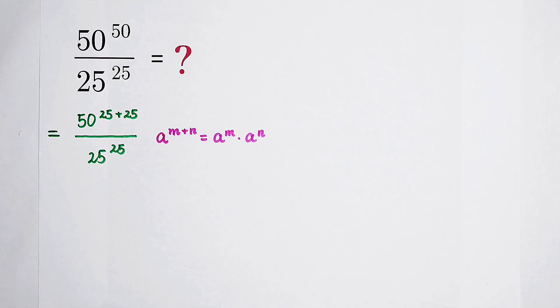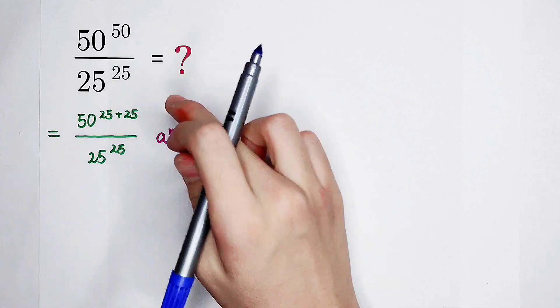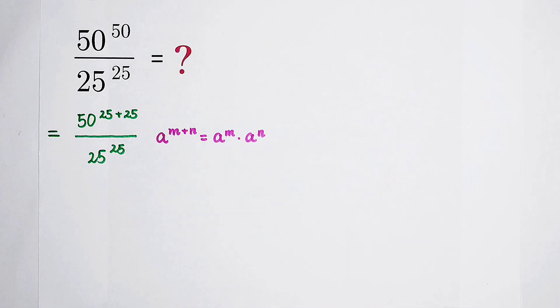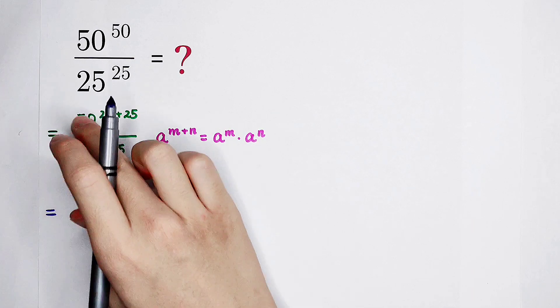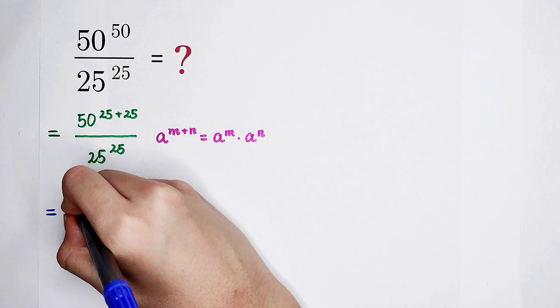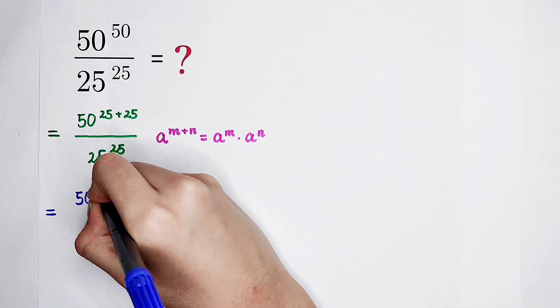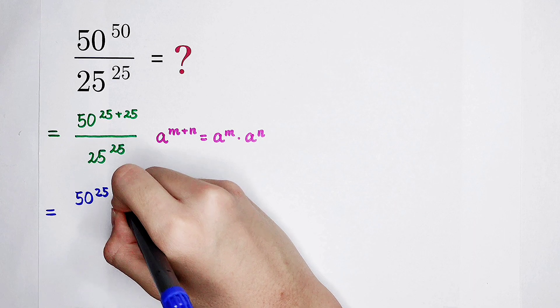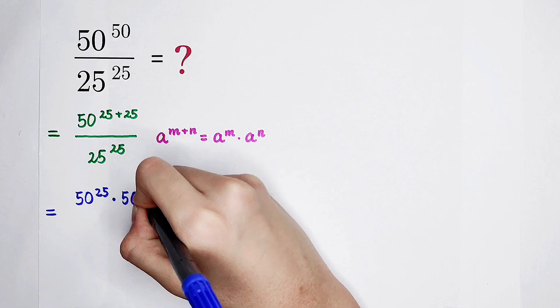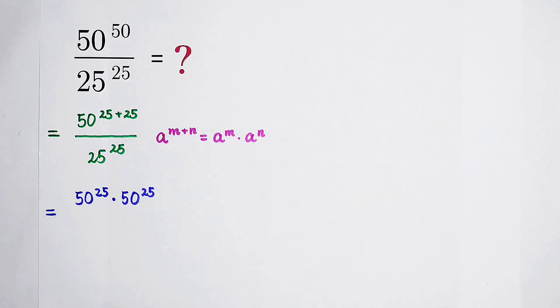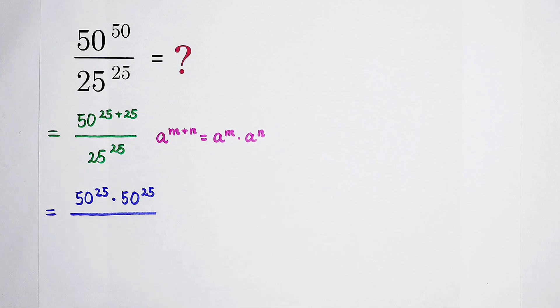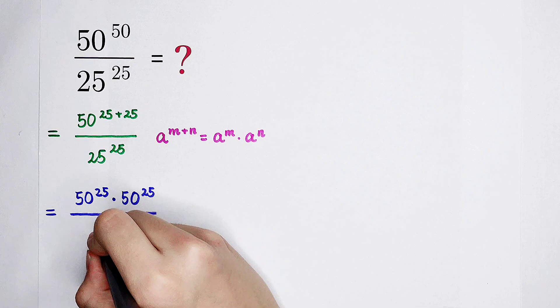And then, here, a is 50, m is this 25, and n is this 25. So, next step is going to be 50 to the power of 25, and then times the base 50, the exponent 25. Very good.